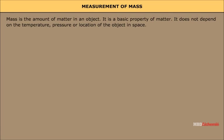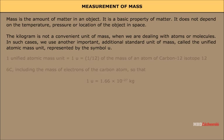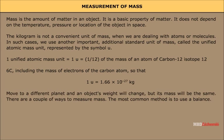Measurement of mass. Mass is the amount of matter in an object. It is a basic property of matter. It does not depend on the temperature, pressure, or location of the object in space. The kilogram is not a convenient unit of mass when we are dealing with atoms or molecules. In such cases, we use another important additional standard unit of mass called the unified atomic mass unit, represented by the symbol u. One unified atomic mass unit is equal to 1 by 12 of the mass of an atom of carbon-12 isotope. Move to a different planet and an object's weight will change, but its mass will be the same. There are a couple of ways to measure mass. The most important method is to use a balance.